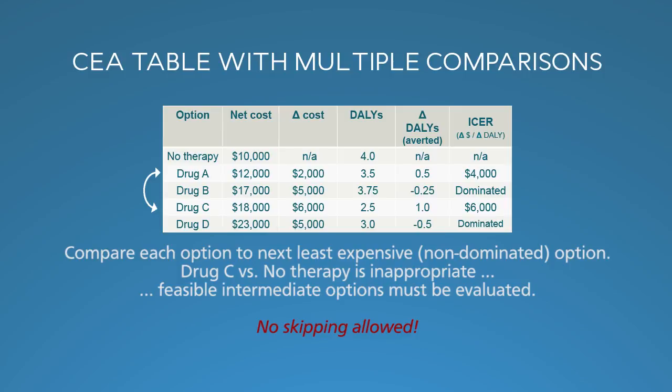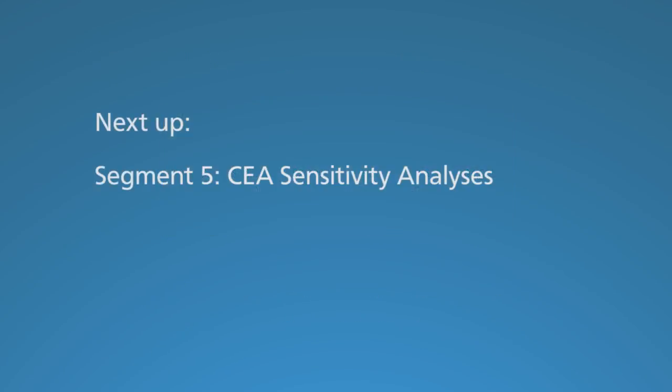That's all for CEA results tables. All of the results are referred to as the base case, using the best estimates for input values. However, there's always uncertainty because we never know each input value with complete precision — the value may have a 95% confidence interval in the source study, or imperfect applicability to the modeled study population. That's why we head next to sensitivity analyses.